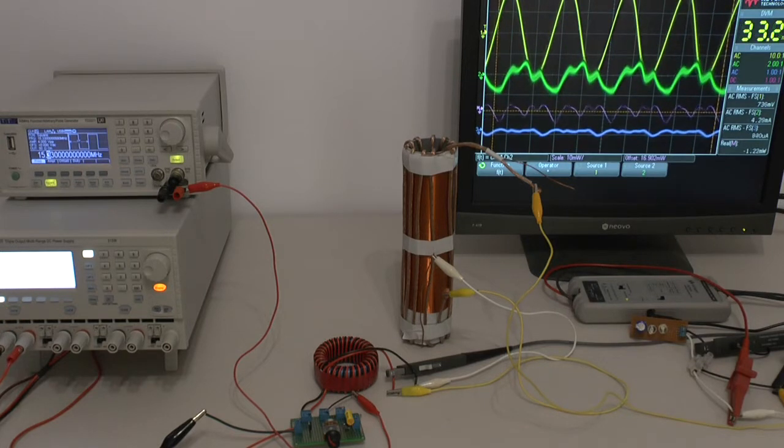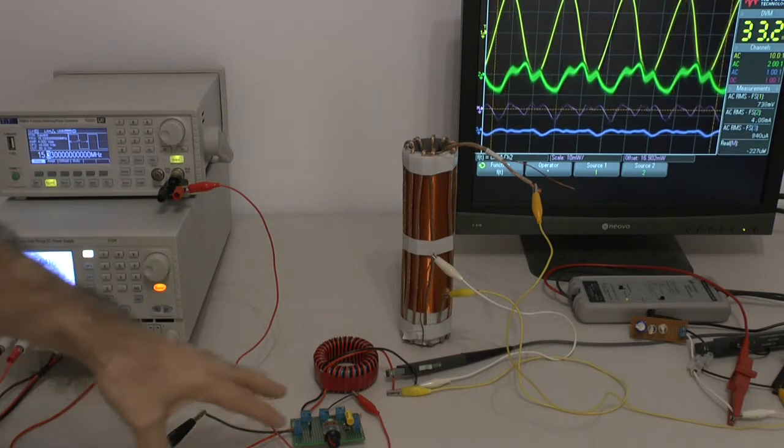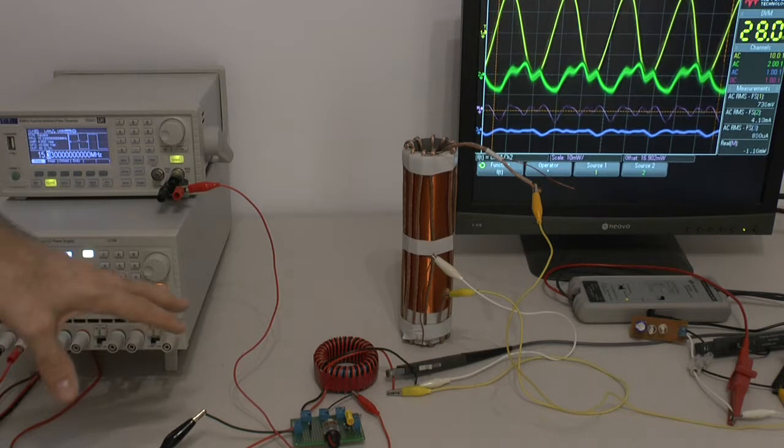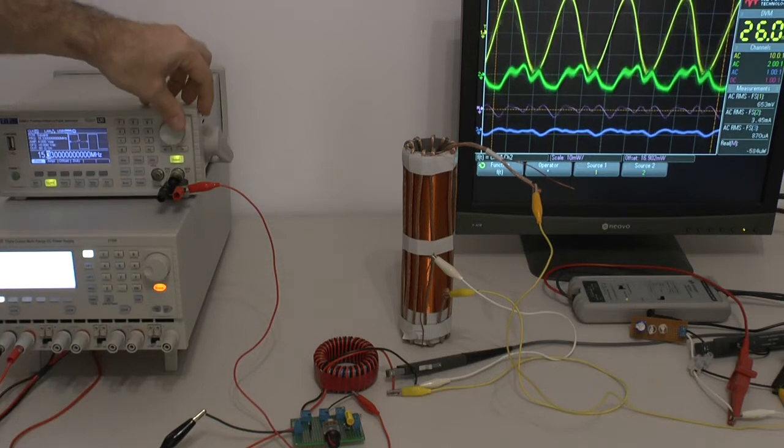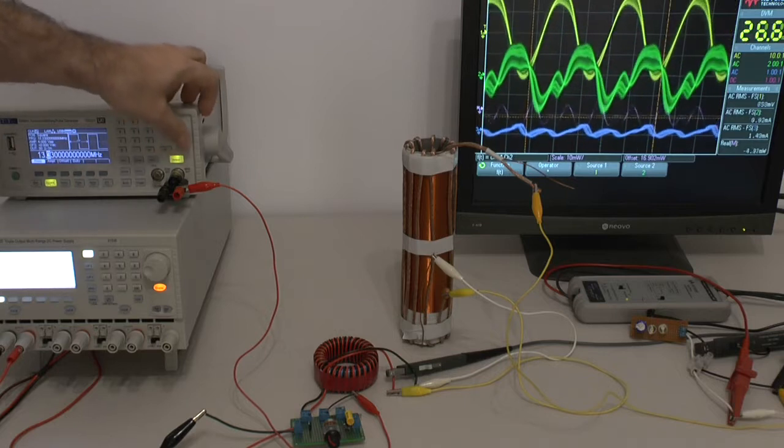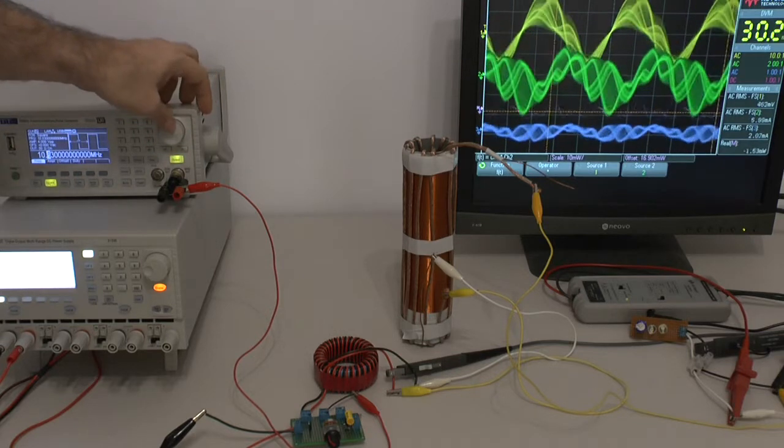What we are left over with is a pure signal from the signal generator. We are at 15.3 megahertz currently, and as you can see, the values are so low I can produce voltage, yes, but I am not able to do anything here from an output point of view.